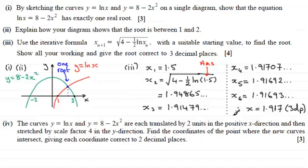Now for part four, we've got the curves y equals ln(x) and y equals 8 minus 2x squared are each translated by two units in the positive x direction and then stretched by a scale factor of four in the y direction. Find the coordinates of the point where the new curves intersect, giving each coordinate correct to two decimal places. So again if this is a question you'd like to have a go at, just give you a moment to pause the video and come back when ready and we'll run through the solution. Okay, welcome back then if you had a go.